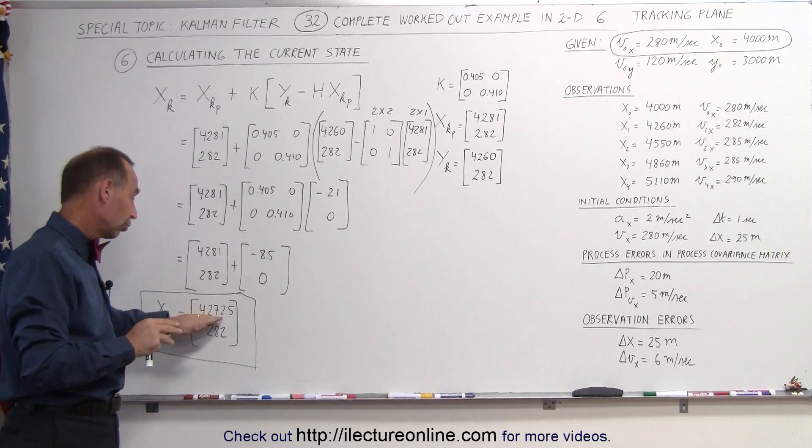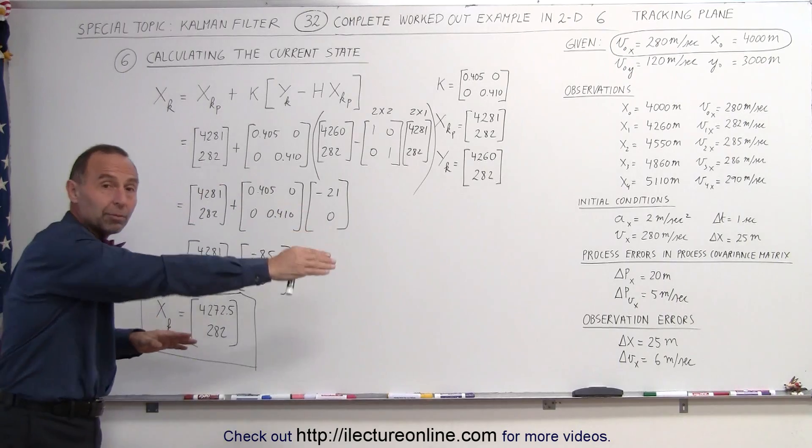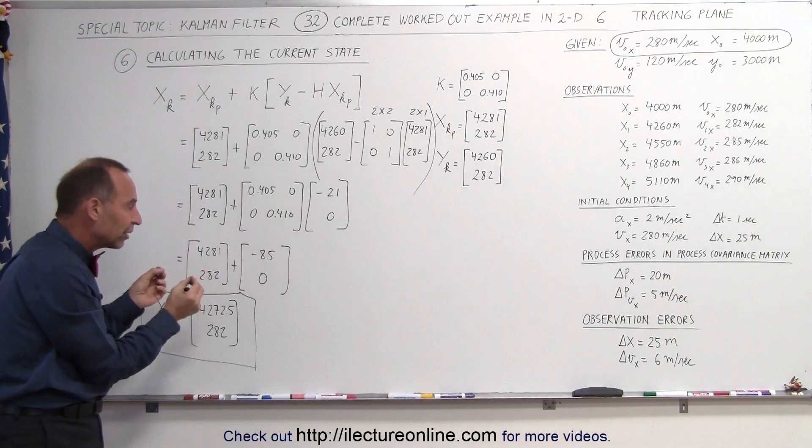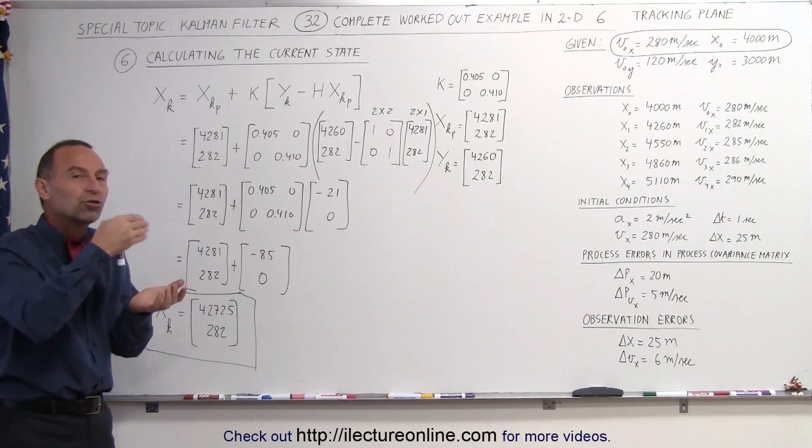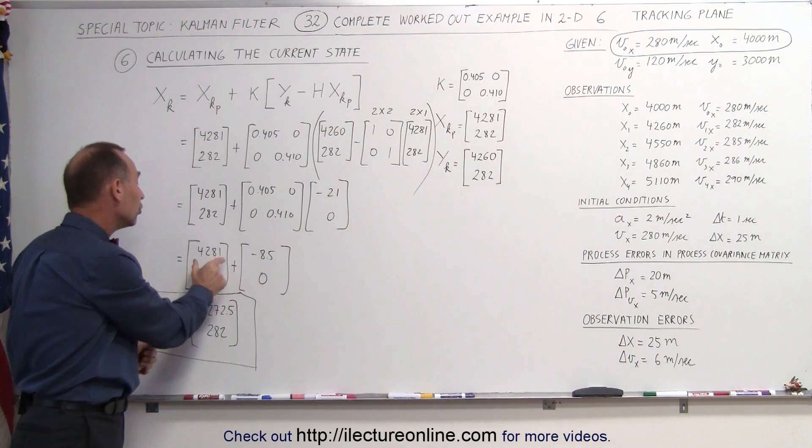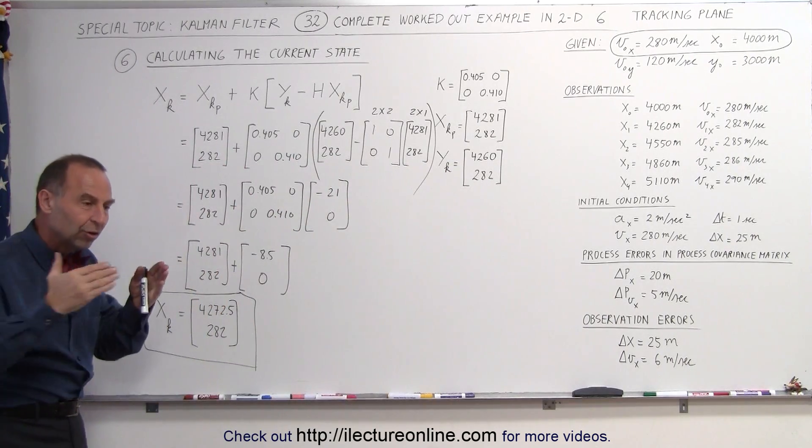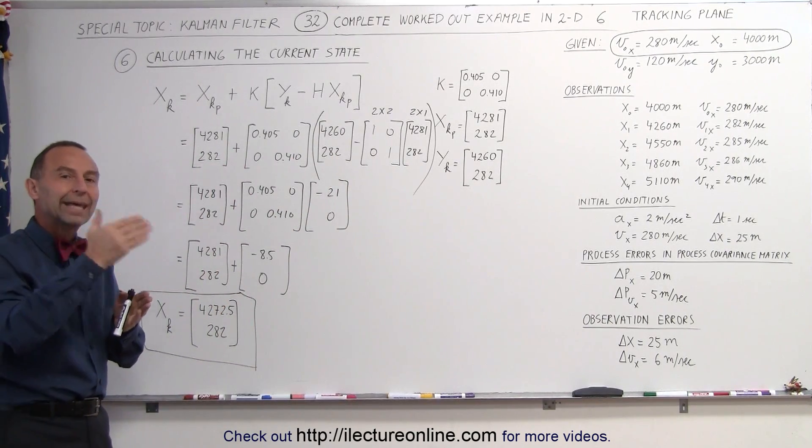We didn't put as much credence into that value, so we only adjusted the predicted value by a little bit because we wanted to lean more towards the prediction rather than towards the measured value. However, just because we leaned more to the predicted value than the measured value didn't mean we completely ignored the measured value.